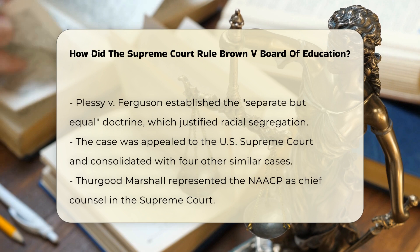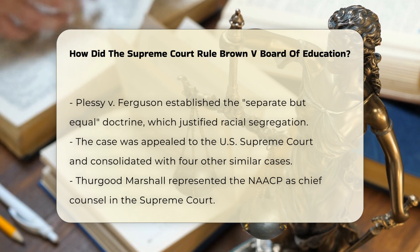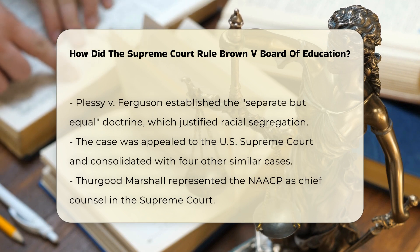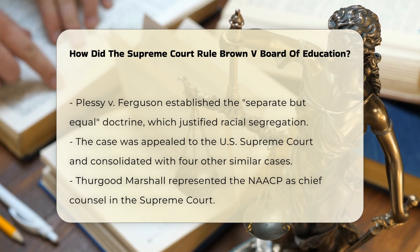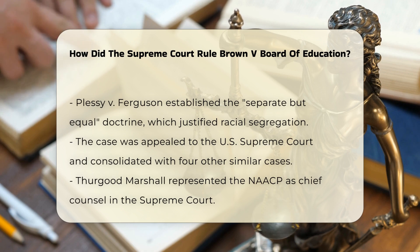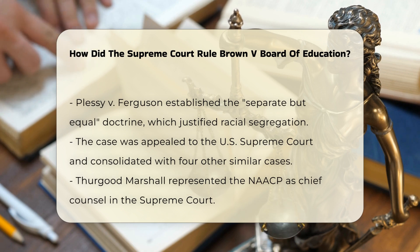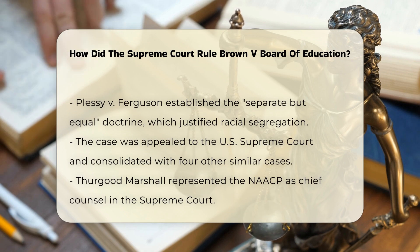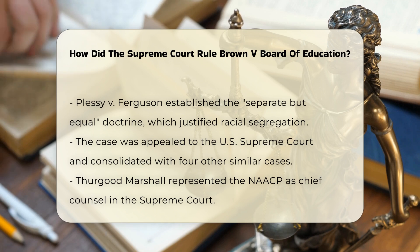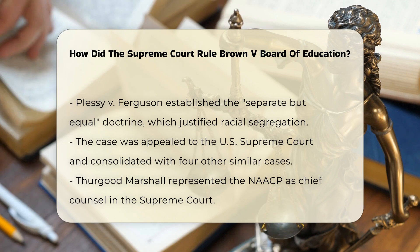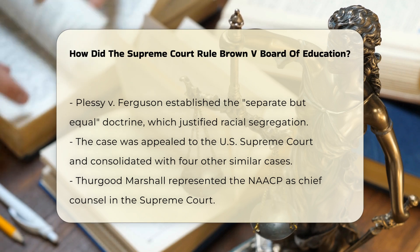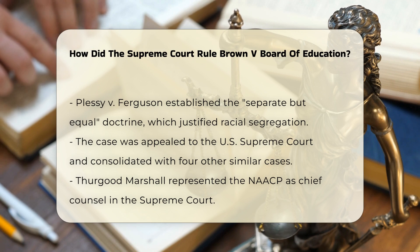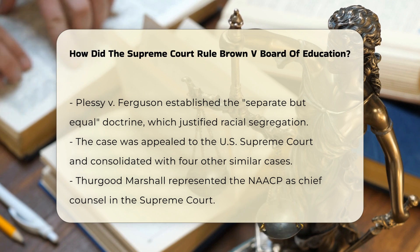However, the U.S. District Court for the District of Kansas ruled against the Browns, citing the precedent set by the 1896 Supreme Court case Plessy v. Ferguson, which established the separate but equal doctrine. The case was then appealed to the U.S. Supreme Court, where it was consolidated with four other similar cases.